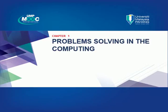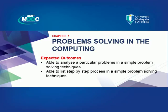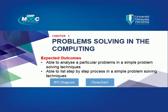This is the first chapter in this Programming Techniques course. The topic covered is Problem Solving and Computing. There are many ways or approaches for problem solving, but this chapter only discusses in the context of a computer approach and producing the solution. The expected outcomes are to produce students able to analyze a particular problem using simple problem solving techniques, and to list step-by-step processes using simple problem solving techniques. Three techniques will be covered: IPO Diagram, Flowchart, and Pseudocode.